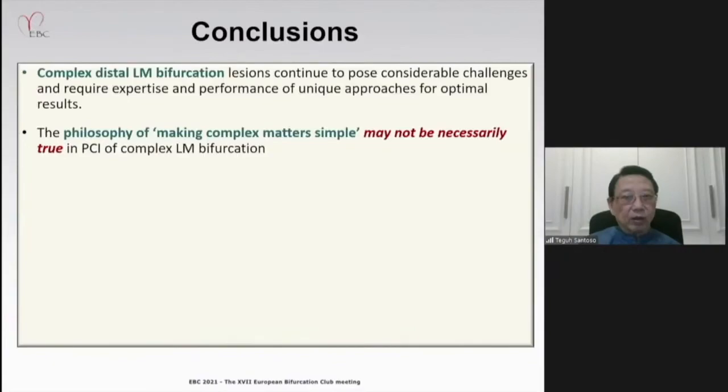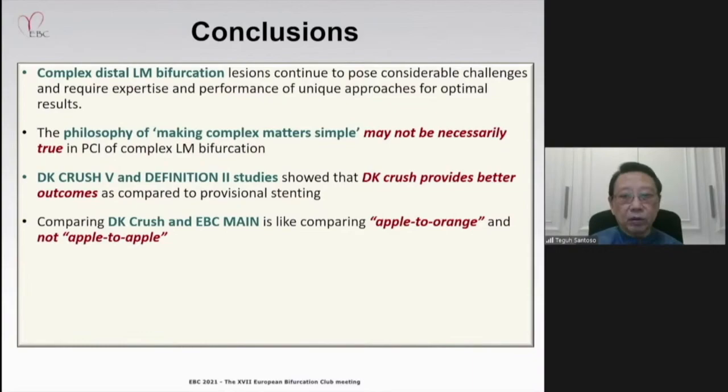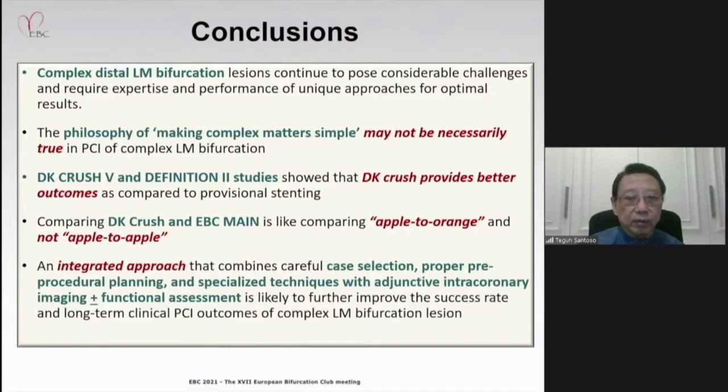In conclusion: the philosophy of making complex matters simple may not necessarily be true for PCI of complex left main bifurcation. DK Crush and the DEFINITION 2 study show that DK Crush provides better outcomes compared to provisional stenting. Comparing DK Crush and ABC Main is like comparing apple to orange. An integrated approach combining careful selection, proper pre-procedural planning, specialized technique with intracoronary imaging, plus or minus functional assessment, is likely to further improve success rates and long-term PCI outcomes of complex left main bifurcation lesions.